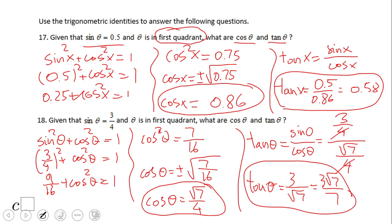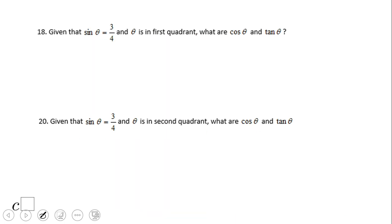If you end up with these two results, cosine of theta equals square root of 7 over 4 and tangent of theta equals 3 square root of 7 over 7, then you did a wonderful job. Of course, you can change all these fractions to decimals if you think it helps you in a better way. What about this number 18 and 19, 19 and 20?